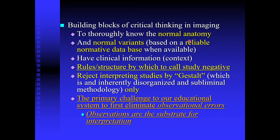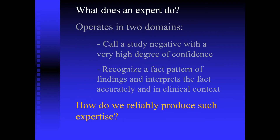In this tool, we've leveraged modern educational IT and adult learning principles. The building blocks are normal anatomy, normal variance, and some structure by which to call a study negative — avoiding the nonsense of gestalt reading of studies. The key is observational discipline, because until you eliminate observational error, you don't have the proper substrate to create accurate interpretation. This begins and ends with a tool that teaches observational discipline, which is not currently included as a disciplined curriculum item.